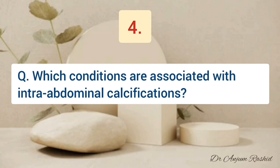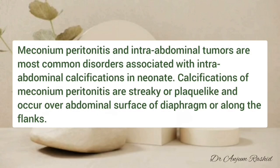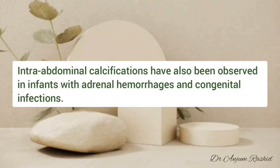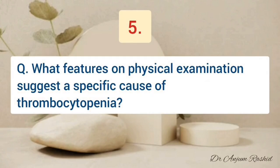Which conditions are associated with intra-abdominal calcification? Meconium peritonitis and intra-abdominal tumors are the most common disorders associated with intra-abdominal calcification in the neonate. Calcifications of meconium peritonitis are streaky or plaque-like and occur over the abdominal surface of the diaphragm or along the flanks. Intra-abdominal calcification has also been observed in infants with adrenal hemorrhage and congenital infections.